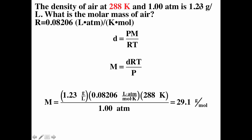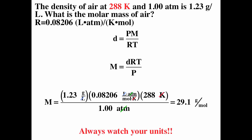With density = 1.23 g/L, R = 0.08206 L·atm/(mol·K), temperature = 288 K, and pressure = 1 atmosphere, we compute M = DRT/P. Atmospheres cancel, Kelvin cancels, and liters cancel, leaving grams per mole. The molar mass of air is approximately 29.1 g/mol. Always watch your units.